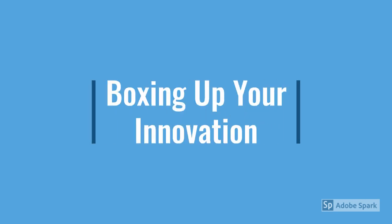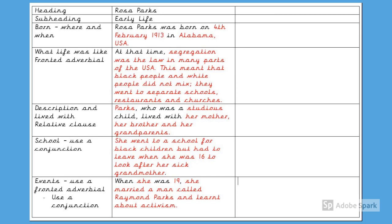Now we're going to start boxing up. This is the box up of our text map. The left hand column tells you what information needs to be included in this part of the text. The middle column is the exact text from our text map about our biography about Rosa Parks. And the far right column is where I will be boxing up my example biography on Gandhi. I'm using Gandhi as an example of how to change the text map, which is on Rosa Parks, into somebody else. You obviously are changing the text into Martin Luther King's biography.